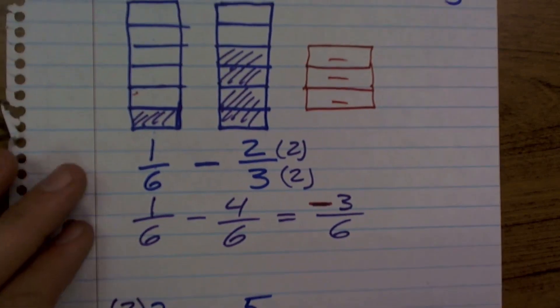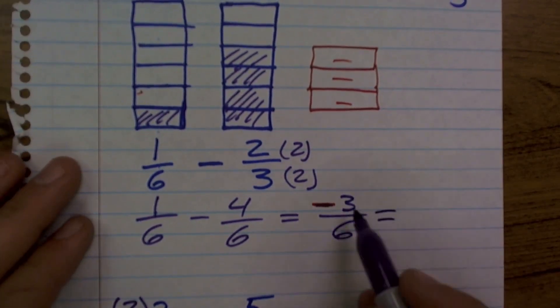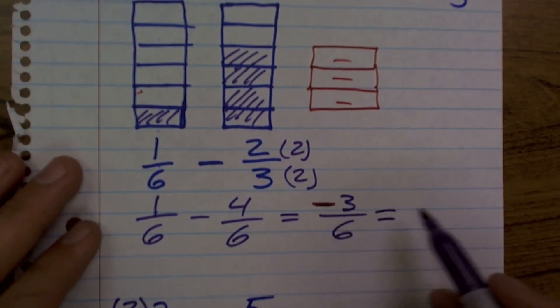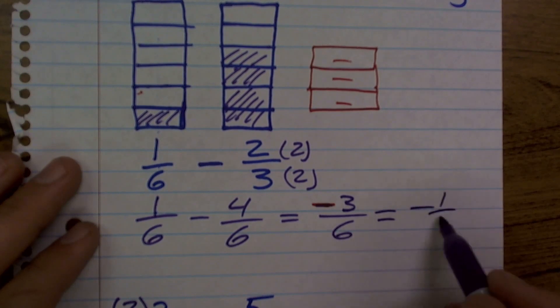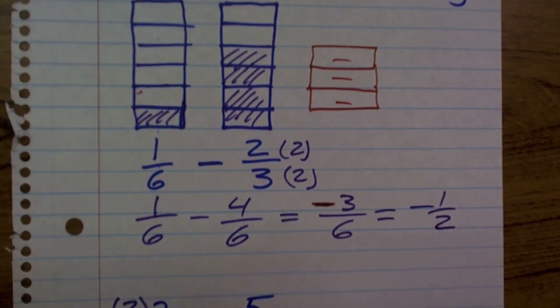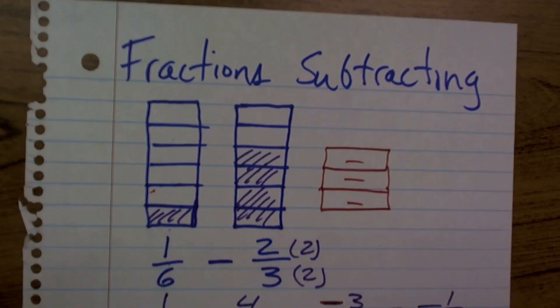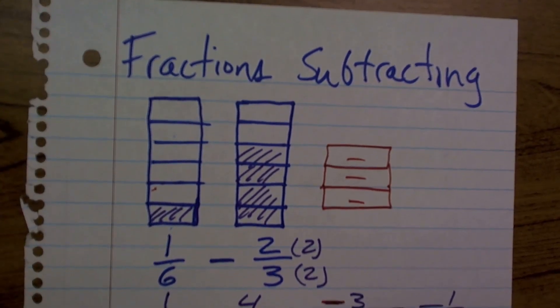Let's go back and reduce the first one. Negative three sixths can be reduced by three on the top and bottom to a negative one half. And that's your fractions of subtracting with unlike denominators.